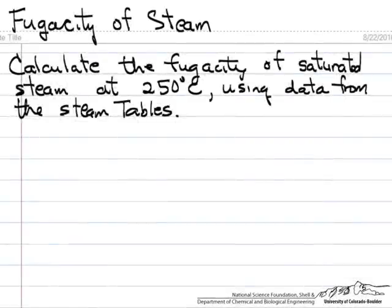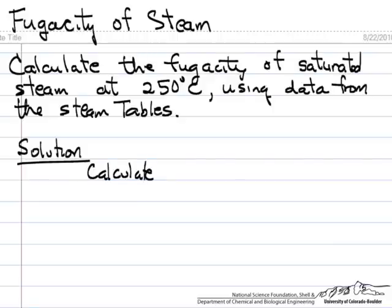In this problem we want to calculate the fugacity of saturated steam at 250 degrees C using data from the steam tables. The steam tables have enthalpy and entropy values, so the plan is to calculate Gibbs free energy at saturated steam conditions and then take advantage of the relation between fugacity and Gibbs free energy.